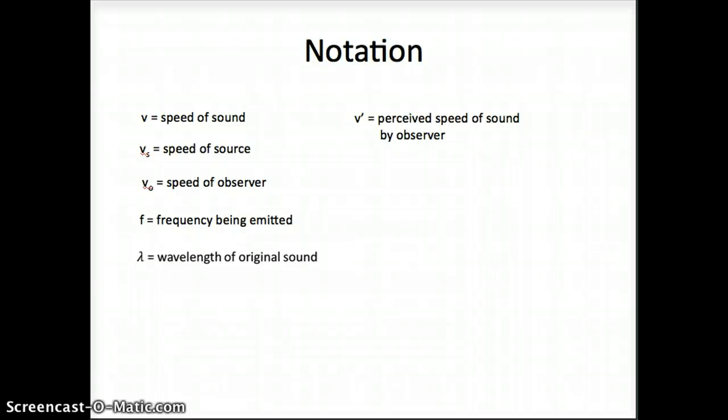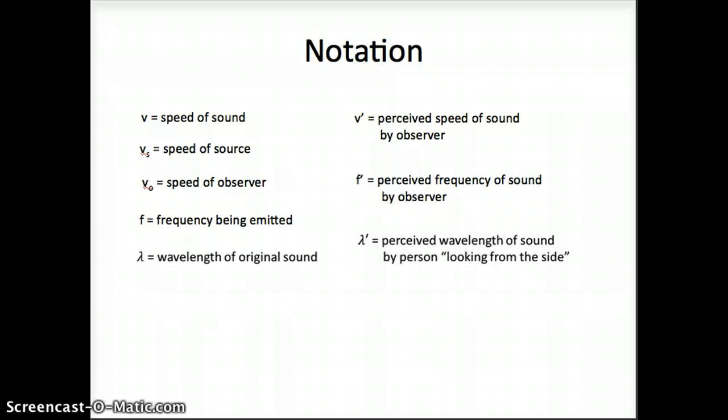V prime is the perceived speed of sound by the observer, so the observer might think that sound is moving through air faster or slower than it actually is due to somebody's movement. F prime is the perceived frequency of sound. This is, in the end, what we're trying to figure out. And lambda prime is the perceived wavelength of sound, and I think of this as a person looking from the side.